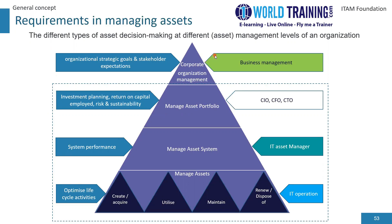At the top we have business management, then the CXOs, then the IT Asset Manager role and other stakeholders, and IT operations at the bottom. This is not a reporting structure — it's how IT Asset Management aligns with other levels of work.